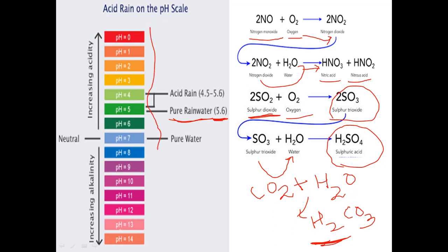Let's look at the pH scale, which ranges from 0 to 14. Any substance with a pH of 7 is neutral — pure water is neutral at pH 7. Any substance with a pH less than 7 is acidic, and any substance with a pH more than 7 is alkaline. Acid rain has a pH less than 5.6, so when rainwater has a pH less than 5.6 we call it acid rain.